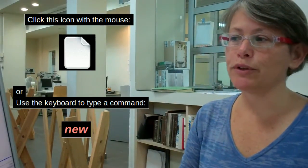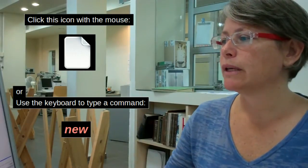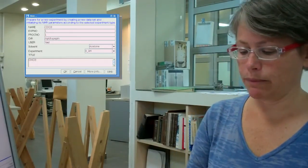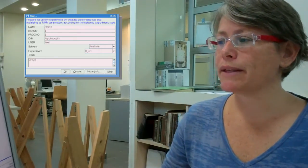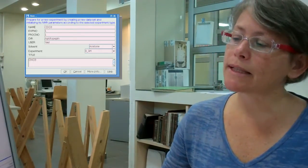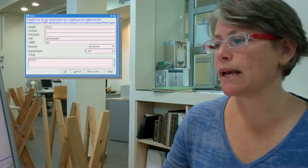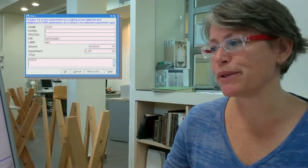Step 2 now is to create a new file. Either type new or click on the icon new. And here for name, I'm going to put my name, followed by a 200. That's to help keep me organized that I'm on the DPX200. The experiment number is 1. It can be any integer value, but no symbols, no letters.